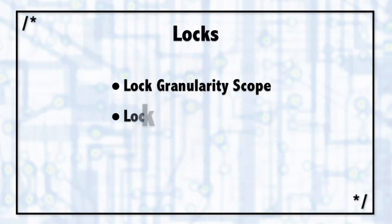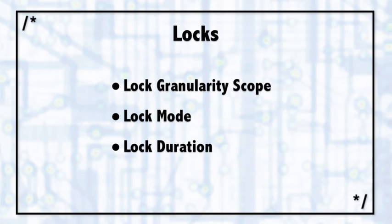SQL Server implements isolation between transactions using locks. Let's talk about locks and explore how they work. A lock has three properties: the first is its granularity or scope, the second is its mode, and the third is its duration.